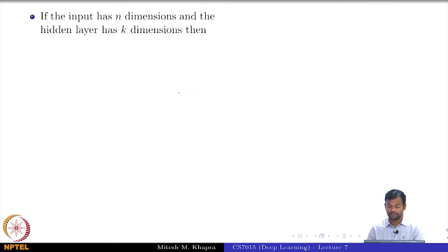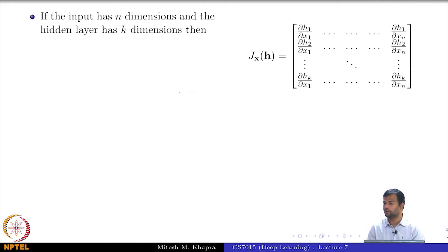It has the input as n dimensions and the hidden layer has k dimensions. This is what the Jacobian looks like. What is the first column? It is the partial derivative of every neuron in the first hidden layer with respect to the first input. This is the derivative of h with respect to the vector x, and since you're taking a derivative of a vector with respect to another vector, you will get a matrix as the output.